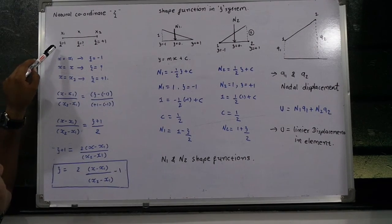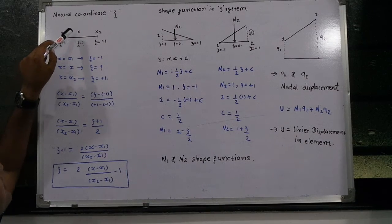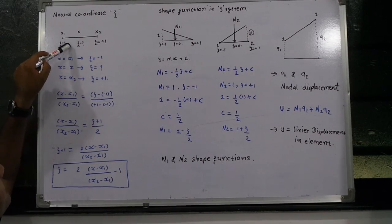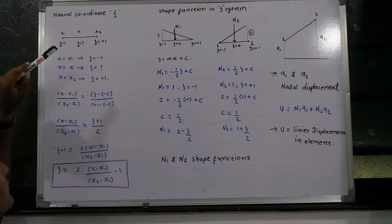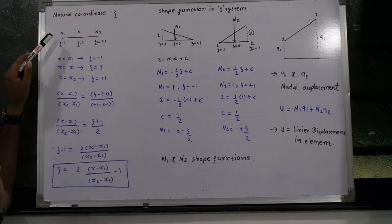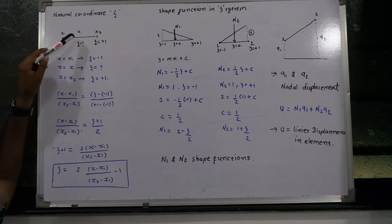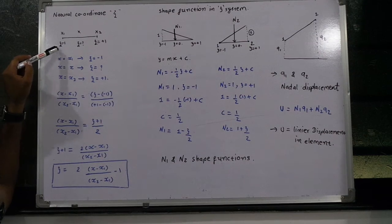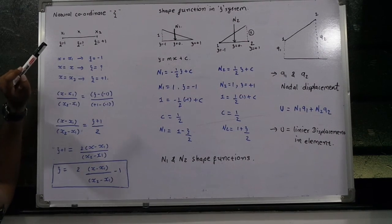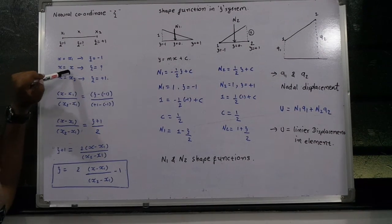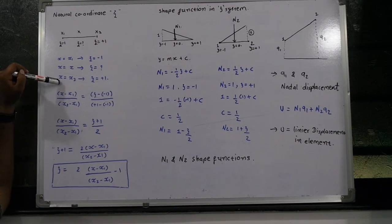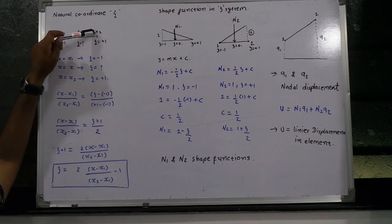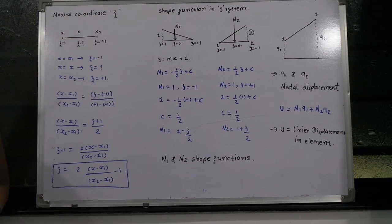So I am taking x1 corresponding to zeta equal to minus 1, and I want to find out the value of zeta at any intermediate position x. At x2, zeta is equal to plus 1. So we can define: when x equals x1, zeta equals minus 1; and when x equals x2, zeta equals plus 1.